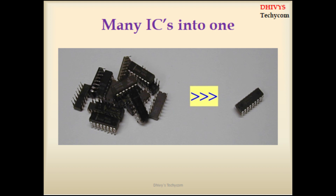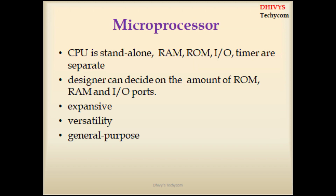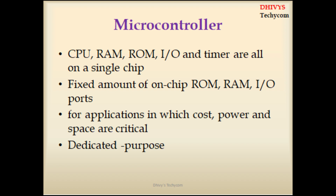For the comparison between microprocessor and microcontroller: the first difference is that in the microprocessor, the CPU, RAM, ROM, and input/output devices are all separate, whereas in a microcontroller, all of them are inbuilt. The microprocessor is general purpose, whereas the microcontroller can be used for dedicated applications — for example, washing machines. That is the basic difference: general purpose versus dedicated purpose.